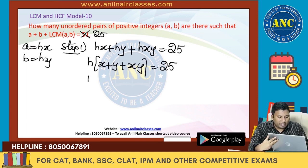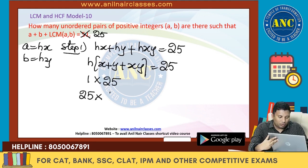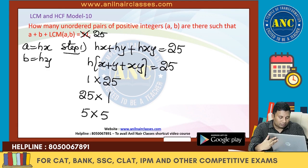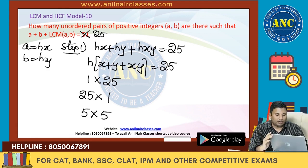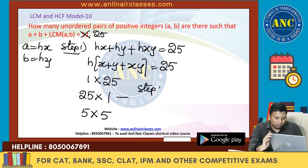25 can be written as 1 into 25, 25 into 1, or 5 into 5. Step 2.